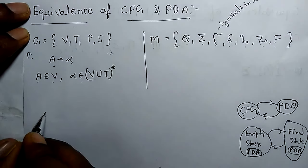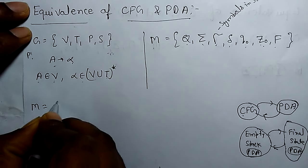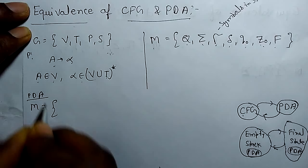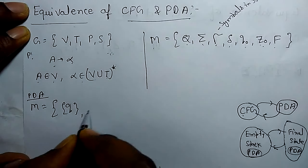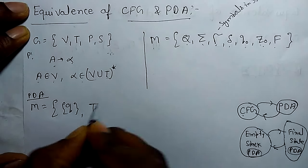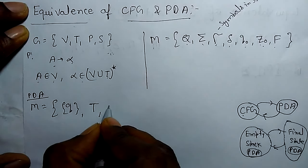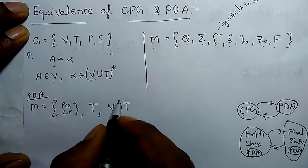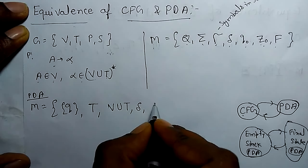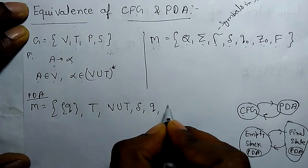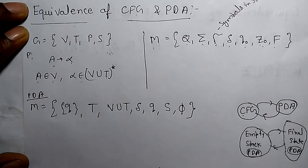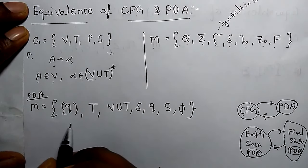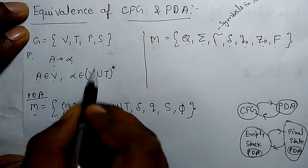So there are some assumptions. If we take a machine for PDA such that the number of states is only one, Q, input symbols are replaced by terminals T, tau is replaced by V union T, the transition function is the same, Q is the state, S is the start symbol, and there is nothing in the stack. So this is an empty stack acceptance machine that will accept the context free grammar.